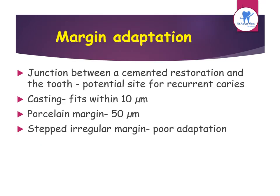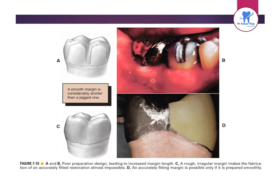Regarding margin adaptation, the junction between a cemented restoration and the tooth is a potential site for recurrent caries. A casting fitting within 10 micrometers for porcelain margins up to 50 micrometers is acceptable. A rough, irregular margin makes fabrication of an accurately fitted restoration almost impossible, while an accurately fitting margin is possible only when the preparation is smooth.